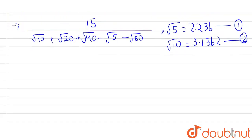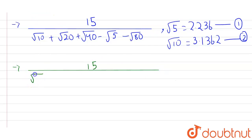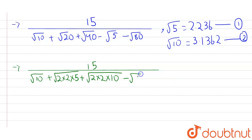Now let's continue with the equation, which is 15 upon... We can rewrite some terms: √10 remains the same, √20 = √(2 × 2 × 5), √40 = √(2 × 2 × 10), and √80 = √(8 × 2 × 5).